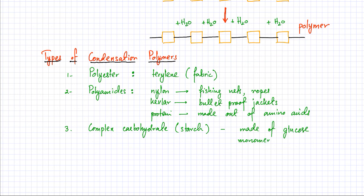This is just a broad description. There are three types of different condensation polymers. One is polyester, the other is polyamide, and the third is complex carbohydrate or starch. We're going to discuss all three in more detail separately now.